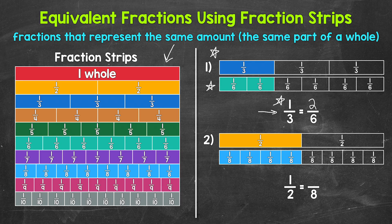Moving on to number two: one half is equivalent to how many eighths? The top fraction strip has the whole rectangle divided into two equal parts — each part is one half — and one part is shaded, so our fraction is one half. The bottom fraction strip has been divided into eight equal parts, so each part is one eighth, and four parts are shaded, giving us four eighths. One half and four eighths are equivalent fractions, and we can see that with those fraction strips.